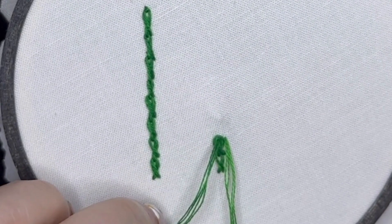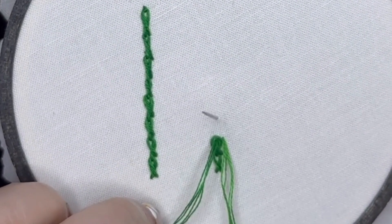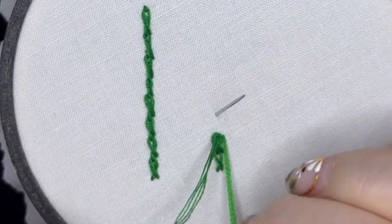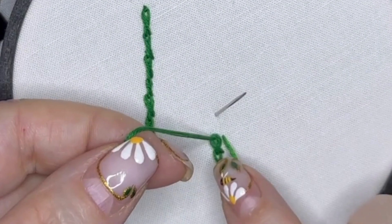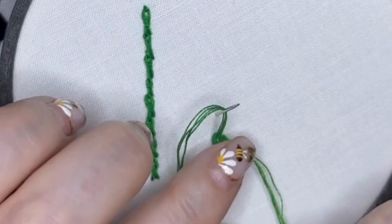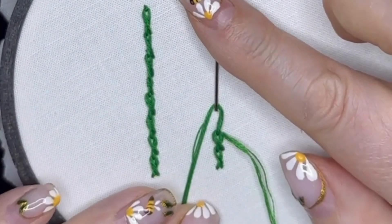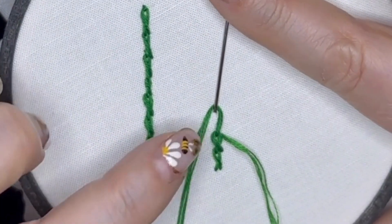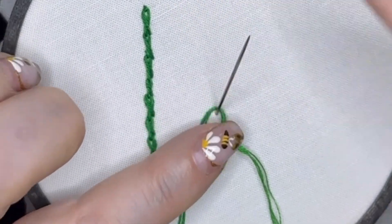We're going to bring our needle up through the fabric above, take our thread and wrap it behind the needle going from right to left. Bring your needle up through and this is your twisted chain stitch.